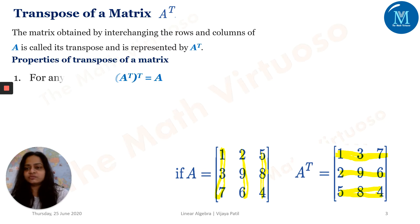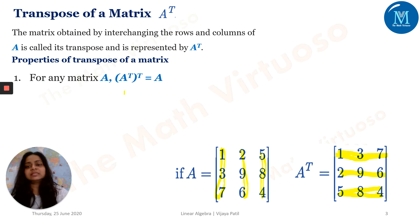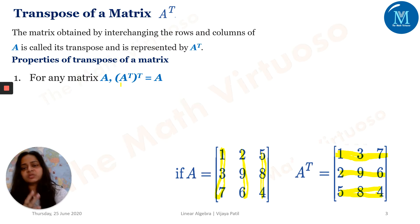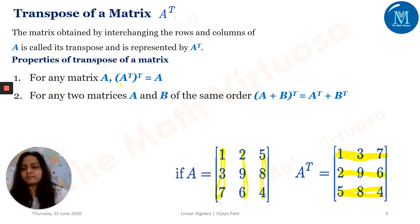A few properties of the transpose of a matrix. First, for any matrix capital A, A transpose transpose will give you A. That means if I take the transpose of capital A two times, it will give me the original matrix A.